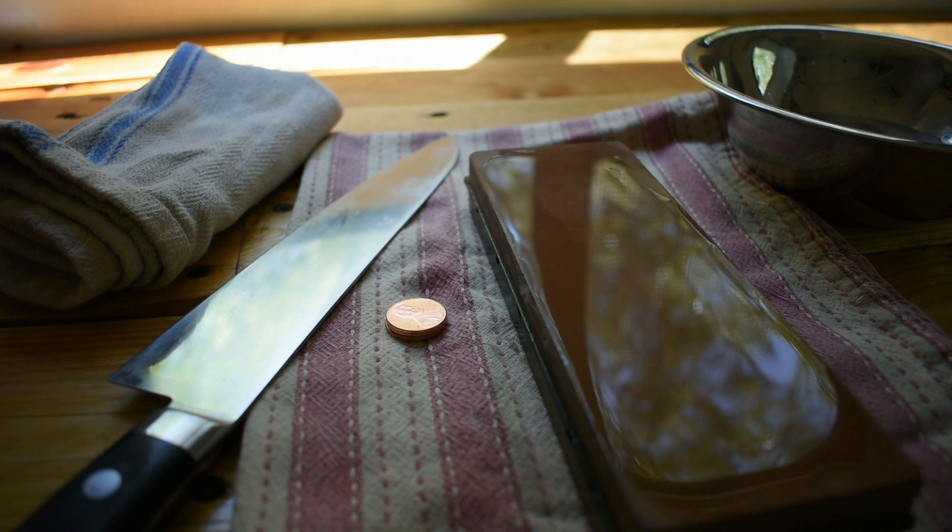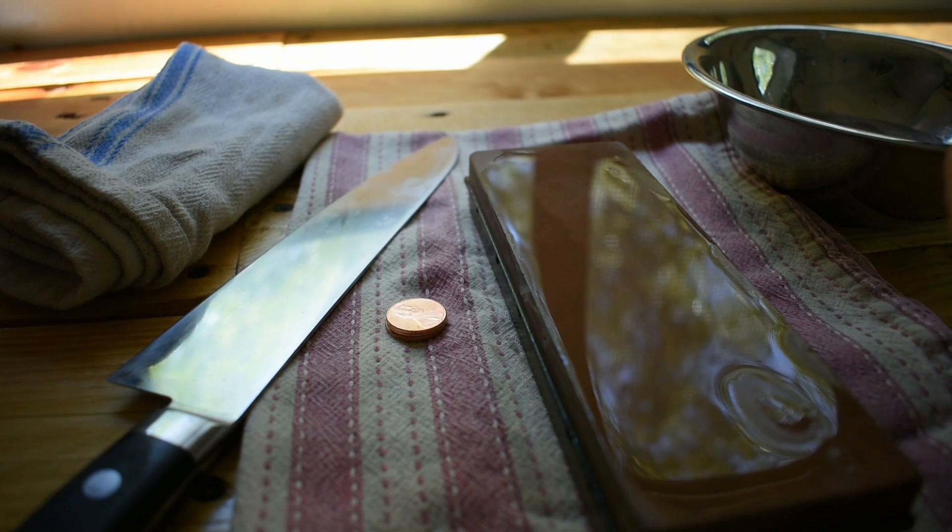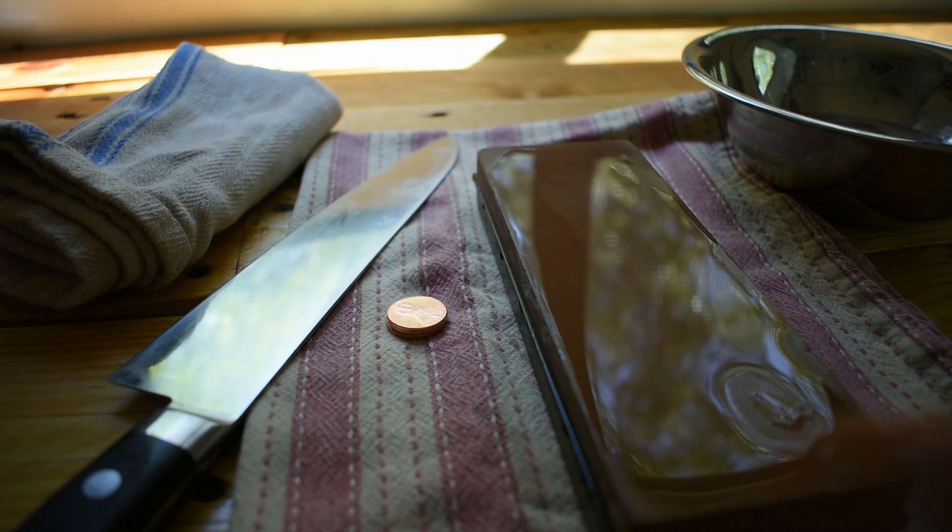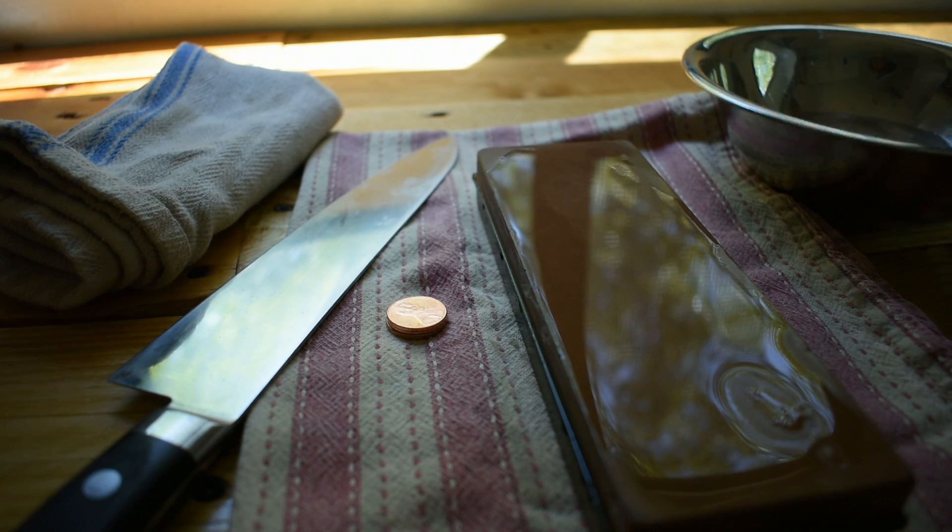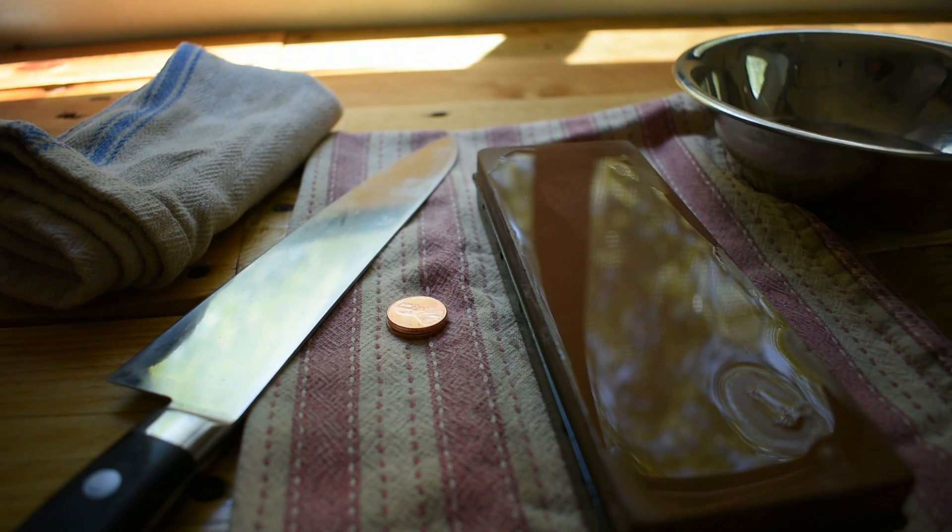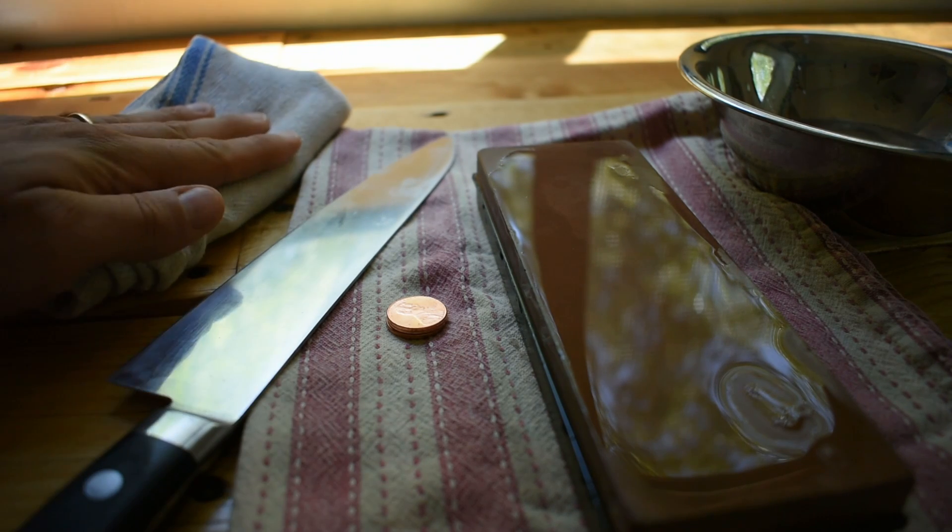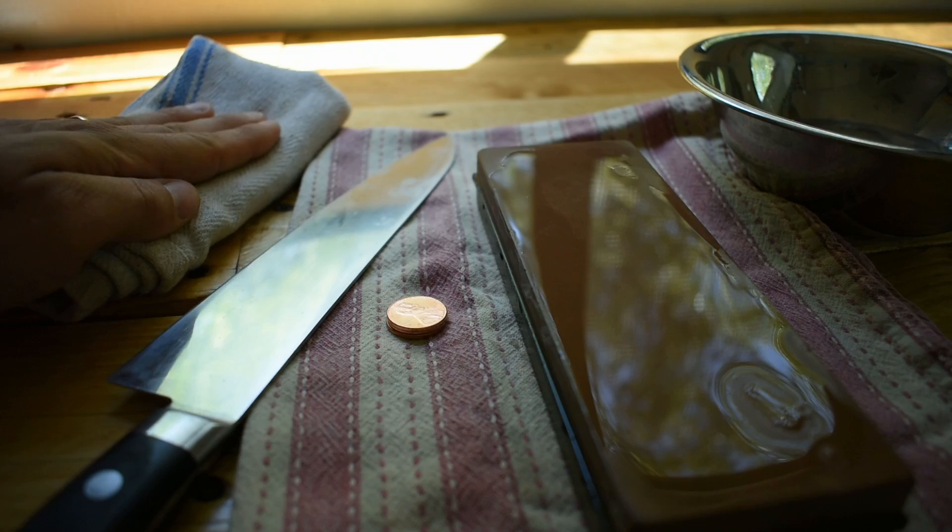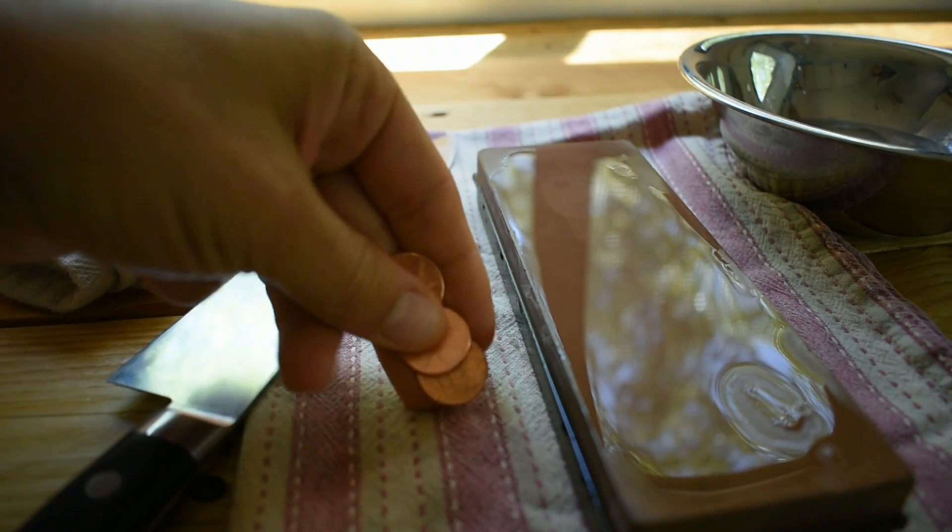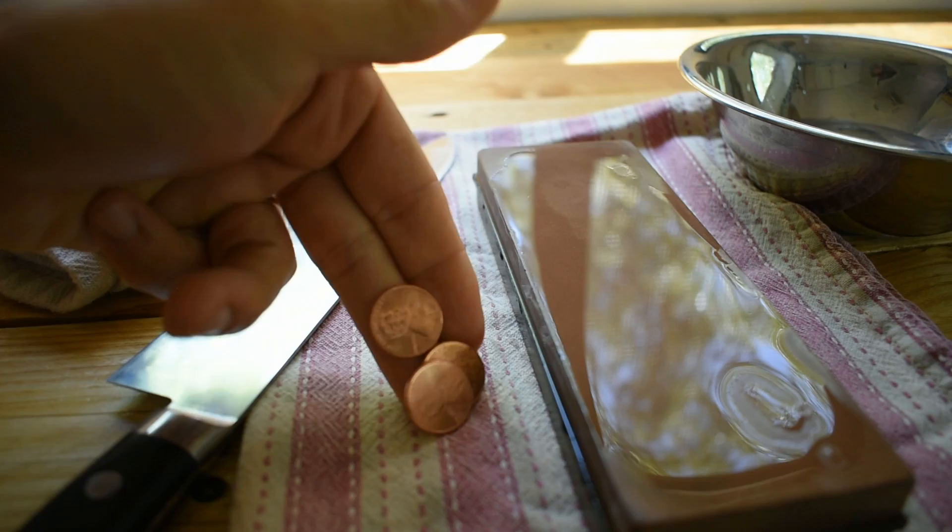Alright, our stone has been soaking for 15 minutes, so we're ready to go. To get ready, I like to put my stone on a rag to keep the stone from moving while I'm sharpening. I keep a bowl of water to keep my stone wet as we go. I've got the knife. I've got a rag to clean the knife as we go. And then some three pennies. And I'll explain how we use that.